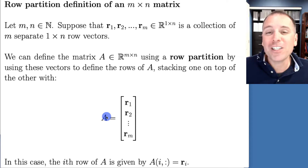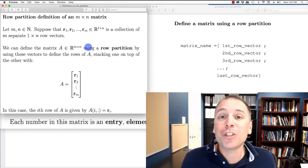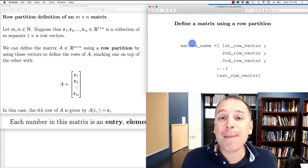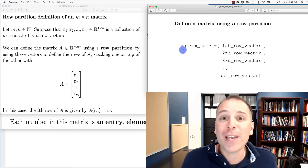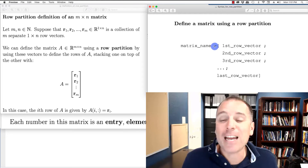This is especially useful when we start talking about matrix-vector multiplication and matrix-matrix multiplication, and also useful for defining matrices in applied problems. Let's look at how to define a matrix using its row partition in MATLAB syntax. This follows the same pattern as any variable declaration — on the left-hand side we have our variable name, then the assignment operator.